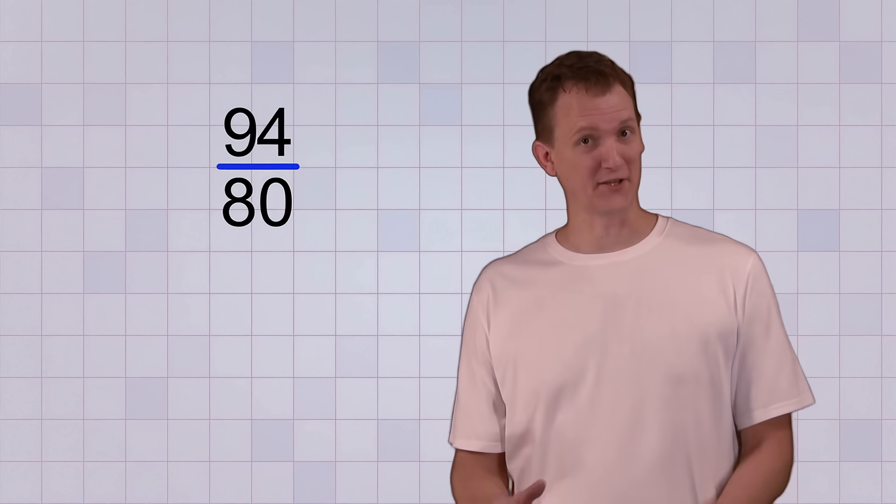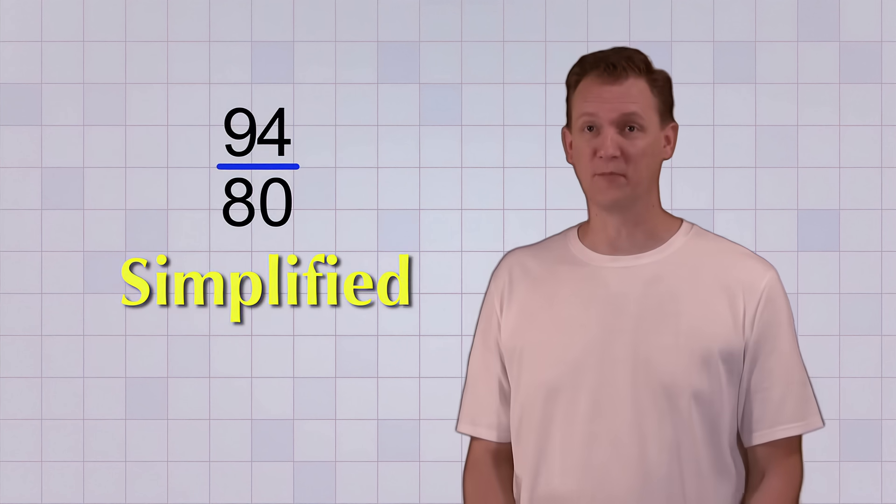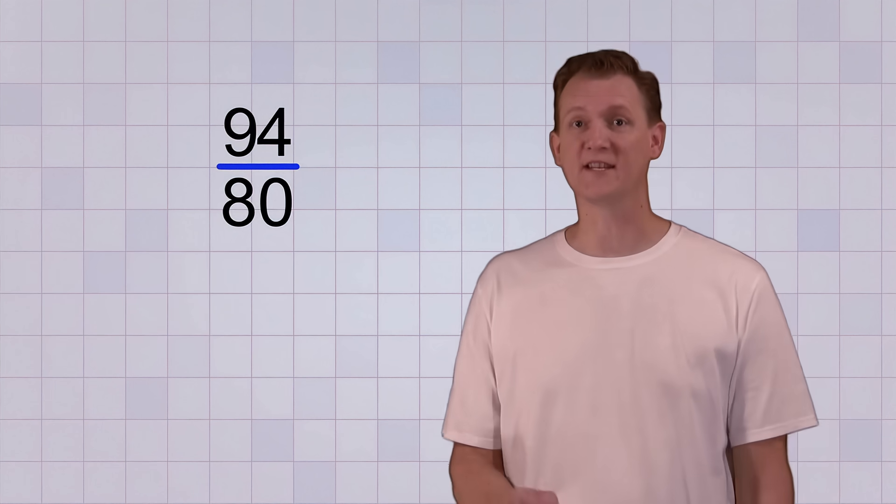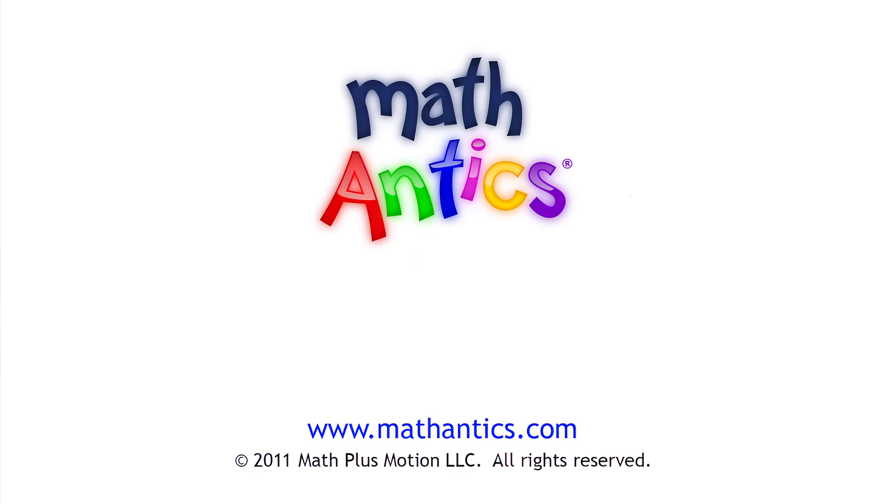Some of you may notice that this answer could be simplified. Be sure to check out our videos on mixed numbers and simplifying fractions to see how you can do that for your final answer. That's the first way you can find the common denominator and change your unlike fractions into like fractions so you can add or subtract them easily. Remember, practice is really important in math, so be sure to do the exercises for this section. After that, check out the next video and I'll show you how to use a different method to find what we call the least common denominator. Thanks for watching and I'll see you next time. Learn more at MathAntics.com.